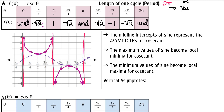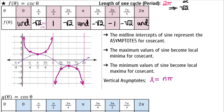The frequency of these asymptotes happens every time we add π to 0, or subtract π from 0. To write an expression that represents all possible vertical asymptotes, I could write 0 plus any integer amount of π. In math, we use the variable n to represent integers, like in sequences and series. So I will write that as 0 plus n times π, or simply nπ.